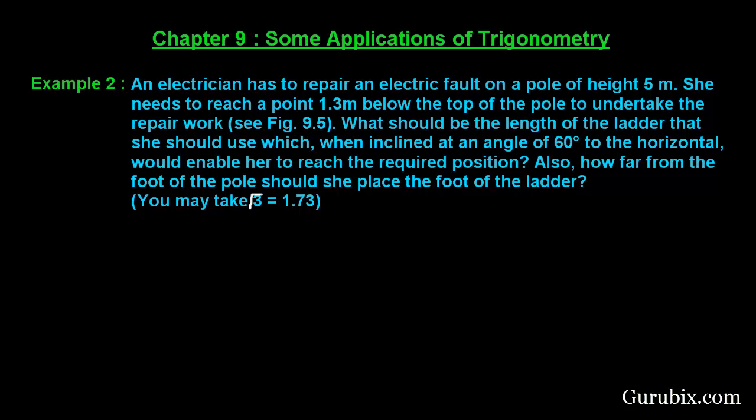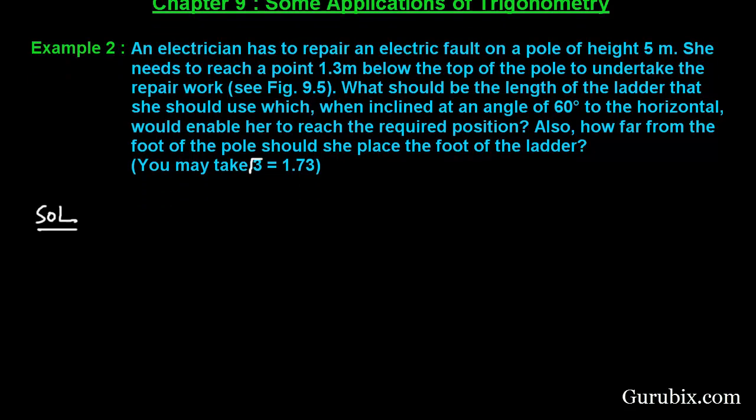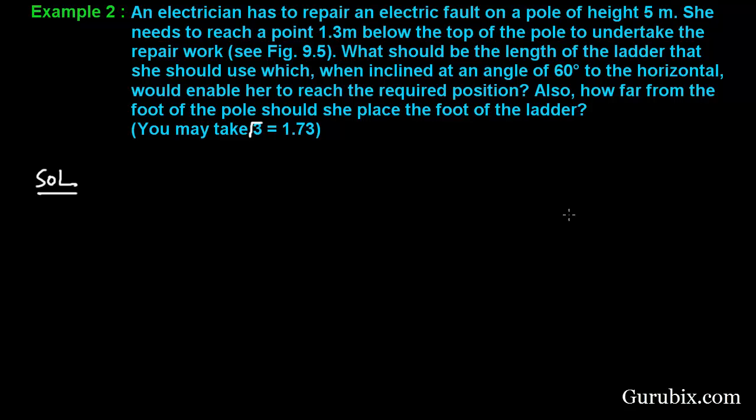Let us see how to solve this question. Let us first of all draw a rough sketch of the figure. Suppose this is the pole and this is the ground and this part of the pole is 1.3 meters and the total length of the pole is 5 meters. So the length of this part remains 3.7 meters and suppose this is the ladder and the pole is vertical on the horizontal.